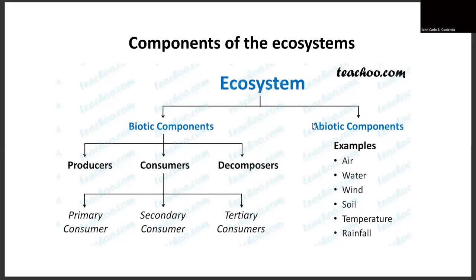An ecosystem is an area wherein biotic components and abiotic components are actually interacting with one another. When we talk about biotic components, we have producers, consumers, and decomposers.